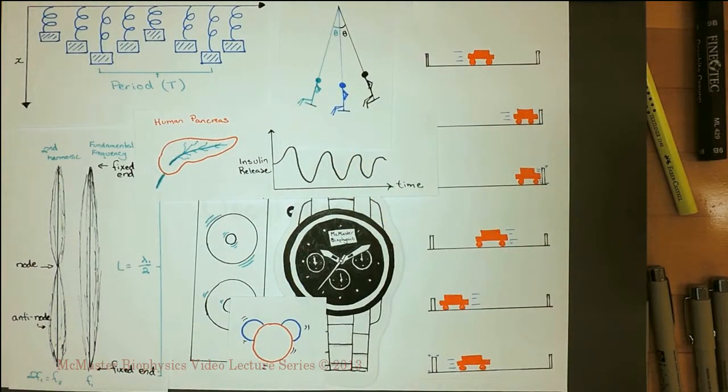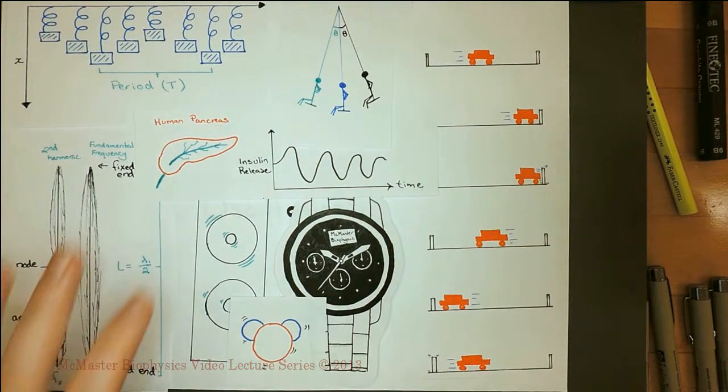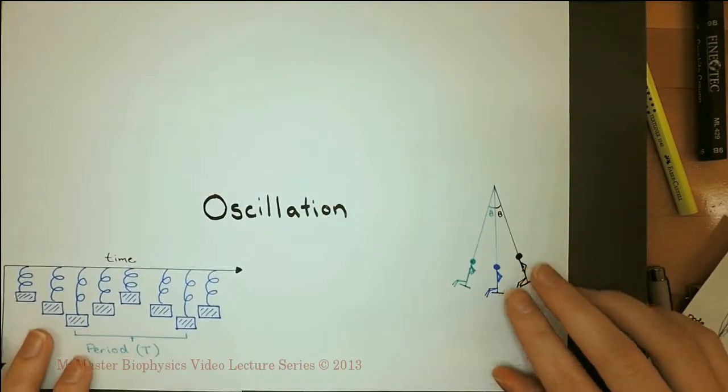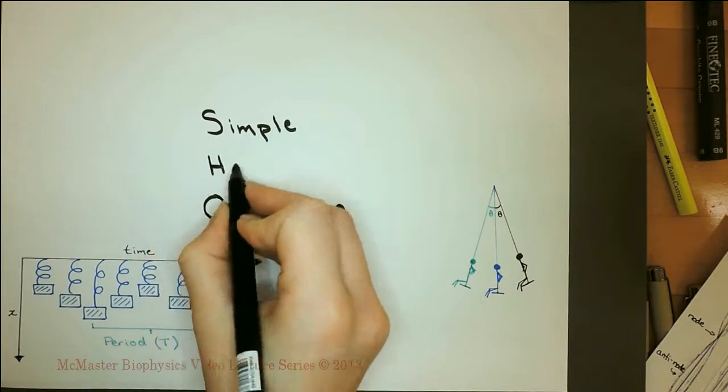But not all of these oscillations are simple harmonic oscillations. In order to be a simple harmonic oscillator, the force on the object must be linearly dependent on its displacement from the equilibrium position. In fact, only the mass hanging on a spring and the adolescent on a swing are simple harmonic oscillators.